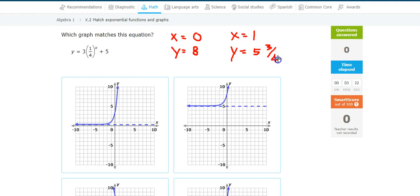So now I need to match these points up with the graph. So I have 0, 8. That doesn't match this graph. 0, 8. This graph matches, but does 1 and 5 and 3 fourths match? No, that one doesn't match.